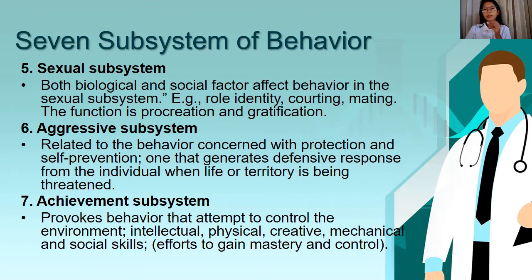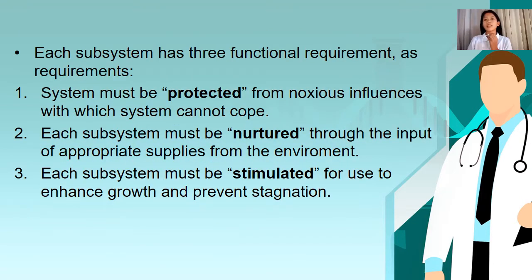Each subsystem has three functional requirements. First, the system must be protected from noxious influences or harmful things with which the system cannot cope. Second, each subsystem must be nurtured or taken care of through the input of appropriate supplies from the environment. Third, each subsystem must be stimulated by stimuli that enhance growth and prevent stagnation.